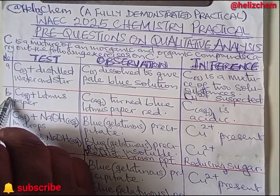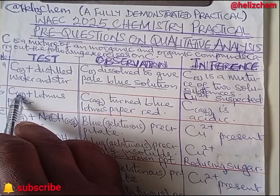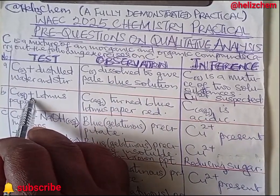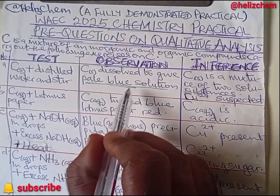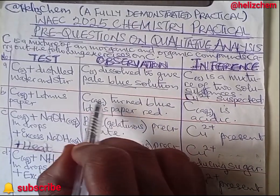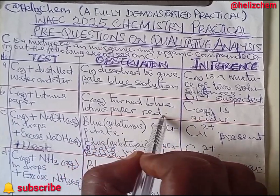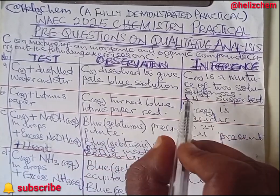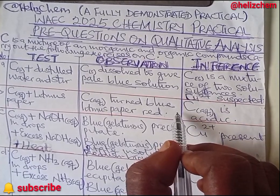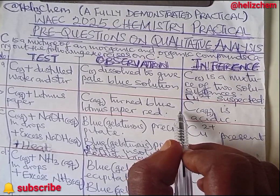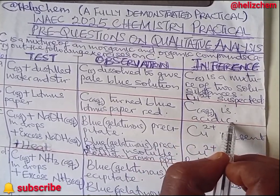Test B: Take the solution from above — that is the aqueous solution of C — and test it with litmus paper. The observation is that the aqueous solution of C turns blue litmus paper red. Any solution that turns blue litmus paper red is likely to be an acidic solution. So your inference is: the aqueous solution of C is acidic.